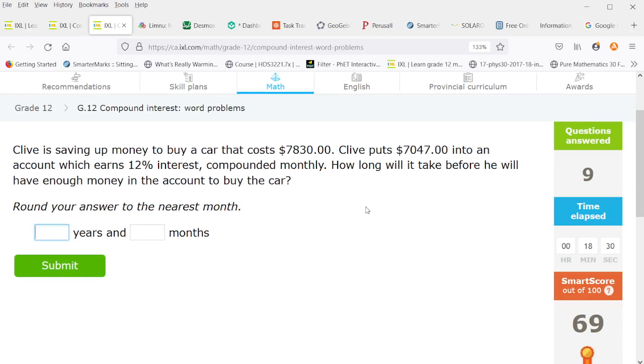All right so Clive is saving up money to buy a car that costs 7,830. He puts 7,047 into an account which earns 12% interest compounded monthly. How long will it take until he has enough money to buy the car? So again 7,830 divided by 7047 and then that's divided by the log of 1 plus 0.12 over 12. So this is coming out at 10.5886, different interest periods but it's compounded monthly so that'll be 0 years, 11 months.